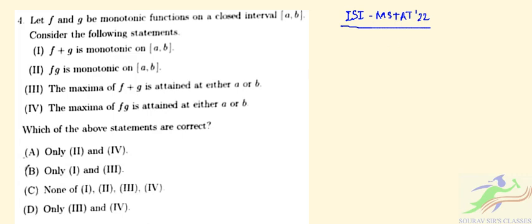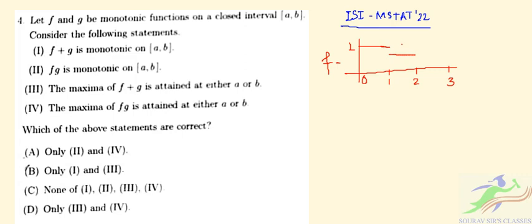Let us consider a monotonic function f on the interval [0, 1]. We place values at 0, 1, 2, 3. Let f be equal to: it is 1 on [0, 1), it is 0 from 1 to 0, and in the interval [1, 2) it is 1/2, and on [2, 3] it is 0.